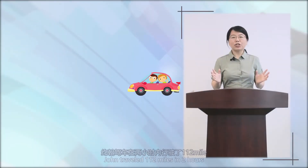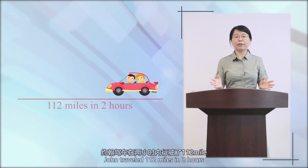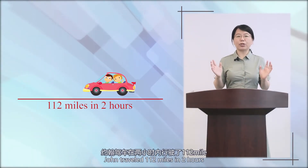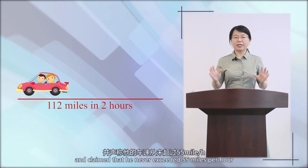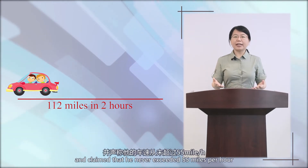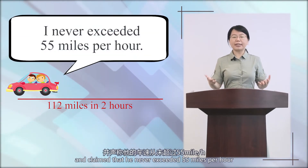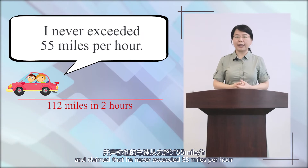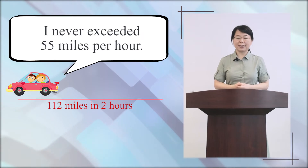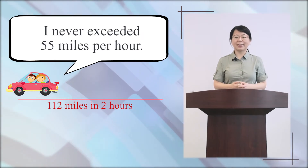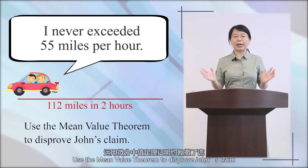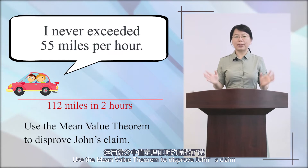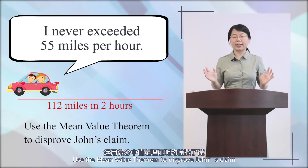Example 1: John traveled 112 miles in 2 hours and claimed that he never exceeded 55 miles per hour. Could you use the mean value theorem to disprove John's claim?